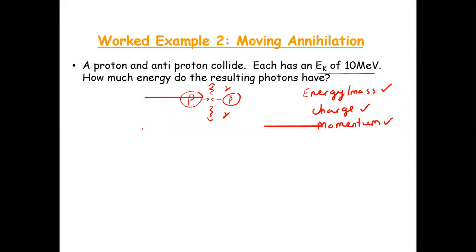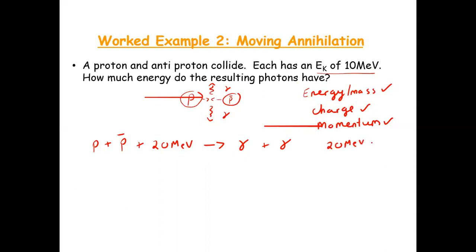So let's look at this problem. We have a proton and an antiproton and they each have a kinetic energy of 10 mega electron volts. So the total kinetic energy would be 20 mega electron volts. When they collide, they annihilate and two photons are formed.